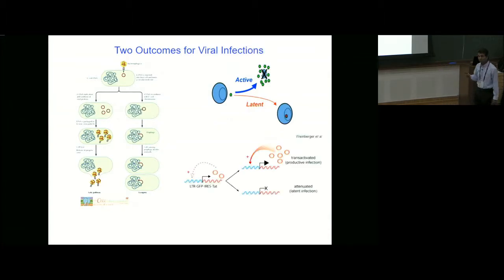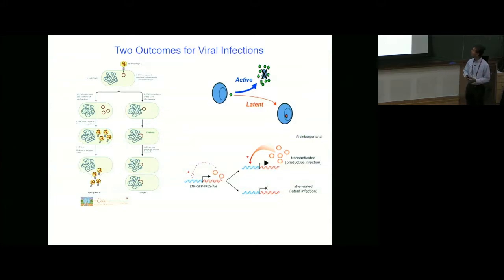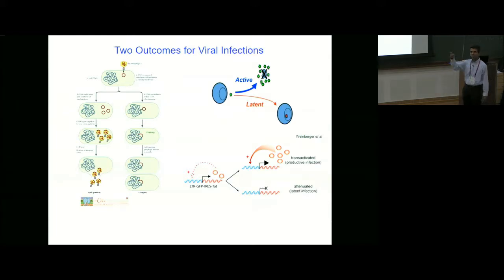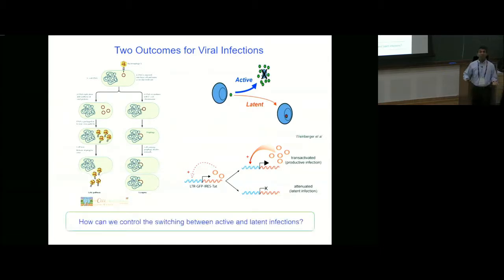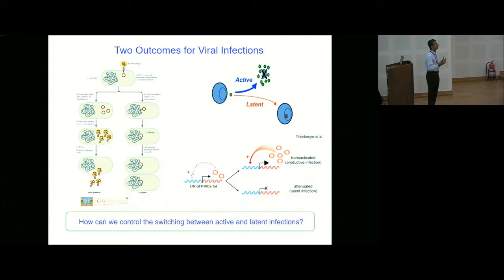The question is how does this arise. What Lior Weinberger's group has shown is that there's a critical protein called TAT, which is part of the viral set of genes and has positive feedback in its expression. The active replication state is correlated with high levels of this protein, which with positive feedback maintain high levels, whereas low protein levels in the cell correspond to latent infection. Going back to yesterday's talk by Tony, you could think of these two as sort of metastable states, and you want to understand switching between these states. That is the key question in the field: how can we control switching between active and latent states?